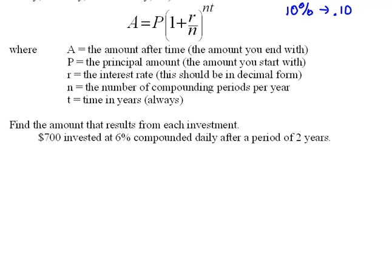This compounded daily tells us which formula we're going to use. We're going to be using A = P(1 + r/n)^(nt).